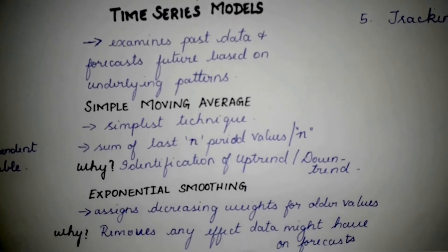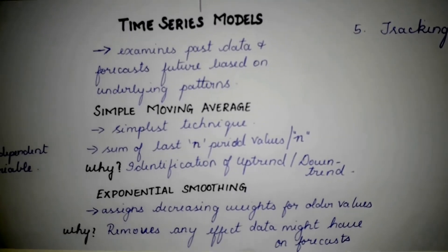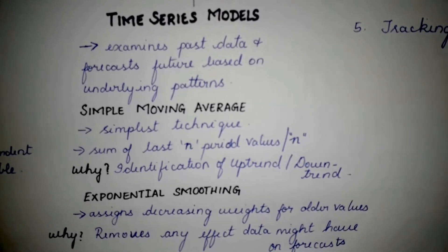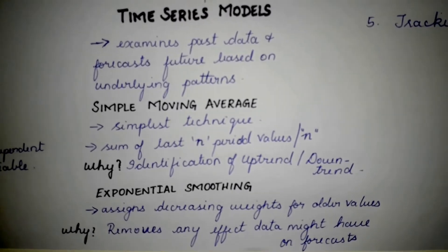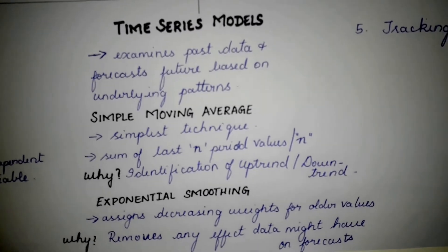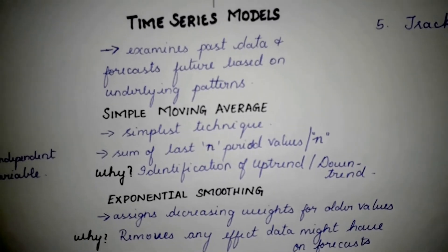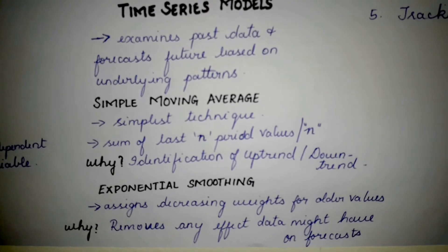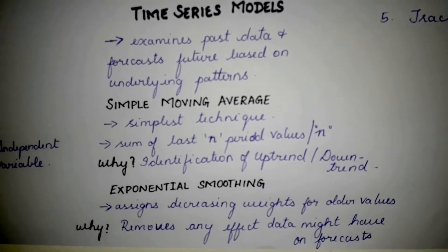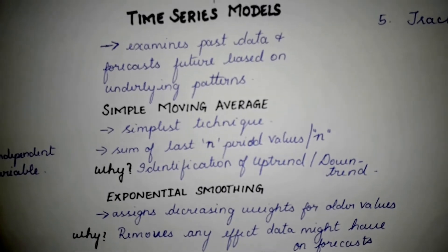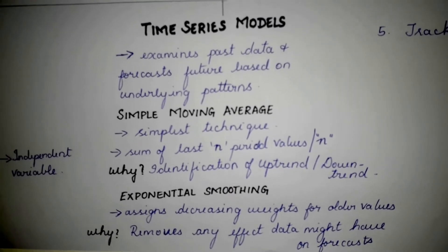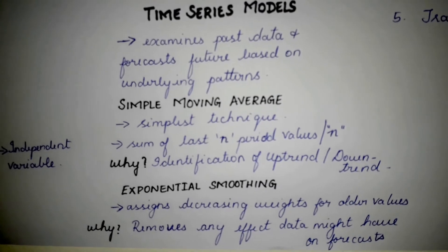Simple moving average is the simplest technique in the quantitative method. A simple moving average is obtained by adding up the last n period values and dividing by n. A simple moving average enables the easy identification of upward or downward trends, thereby enabling quick decision making.